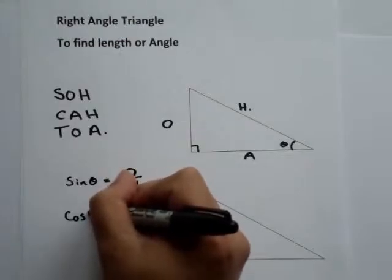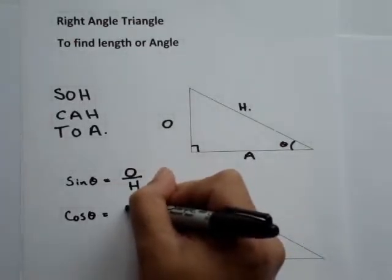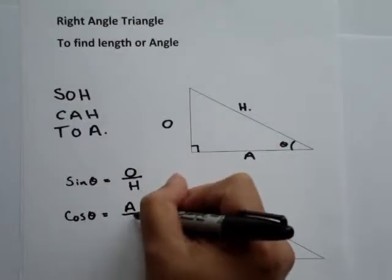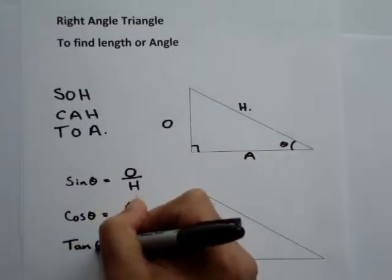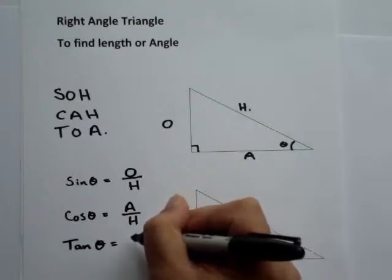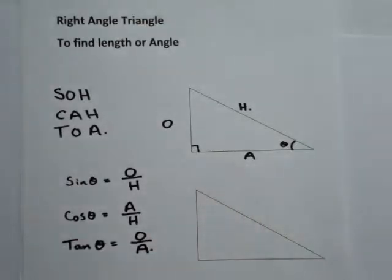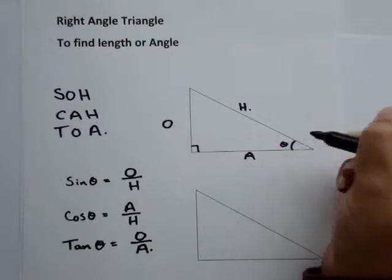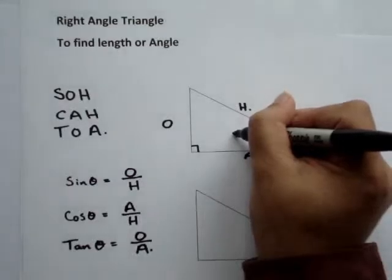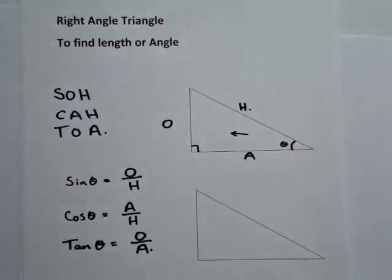Cos theta is equal to the adjacent over the hypotenuse. When we're labelling the sides, remember that we label with reference to the angle theta — so adjacent is directly next to the angle, opposite is directly across, and the longest side is the hypotenuse.